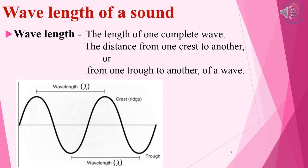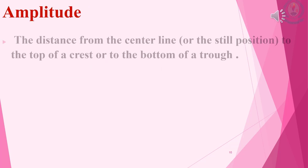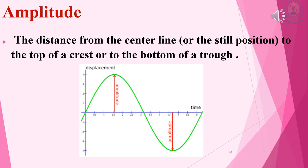The distance between two consecutive troughs or crests is equal to the wavelength. The amplitude of a wave is the maximum displacement shown by the particles taking part in the wave motion. The height of the crest or the depth of the trough from the central position of the sound wave is the amplitude of a wave.